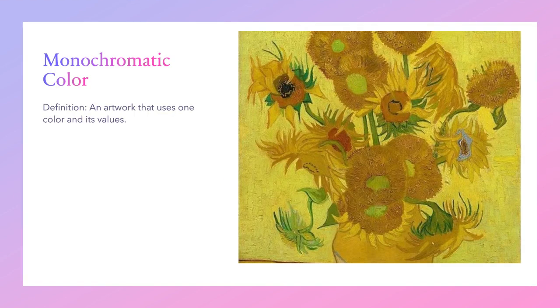Monochromatic color refers to an artwork that uses one color and its values. In this particular image, that means light whites, light yellows, and dark yellows.